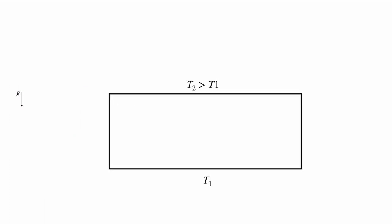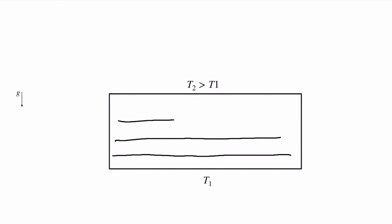Let's think of some more geometries. Let's imagine a box where the temperature on the top surface is greater than the temperature at the bottom. Thinking about the fluid inside this box: if the temperature at the top is higher, my density is going to be lower at the top, meaning we'll have the lowest density fluid up here and the highest density fluid at the bottom. What's going to tend to happen is a nice stratification of the flow — no motion at all — with a continuous decrease in density with the lighter fluid sitting on top of the heavier fluid. There'll be no fluid motion, and this will be a conduction problem only.